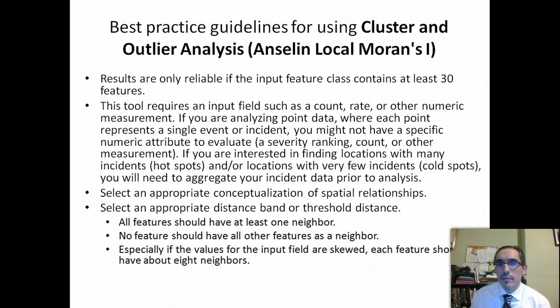When we use this tool, there's a few basic best practice guidelines that guide our use of it. We have to have at least 30 features. This is a rule of thumb for using inferential statistics in general that you want to have at least 30 features. With geographic datasets, usually that's not a problem. In fact, you usually have the opposite problem. You have too many features which can actually inflate the statistical significance. In all cases, when you do cluster analysis, the features you're analyzing have to have an attribute value to do the cluster analysis. There has to be a number behind each point in order to do this analysis. It could be a count, a rate, or some other kind of measurement.